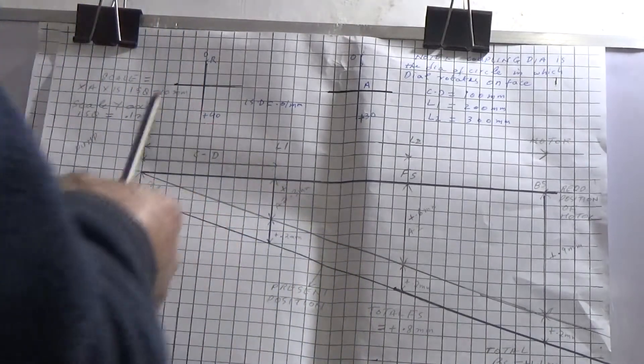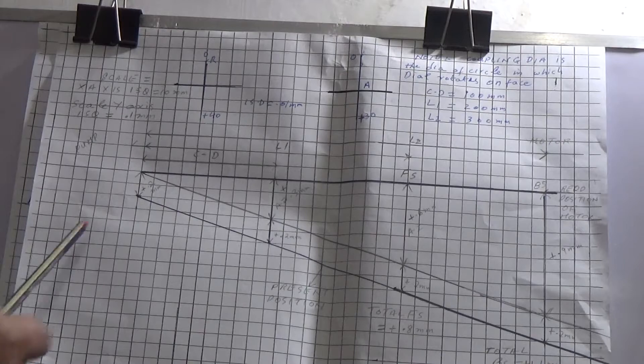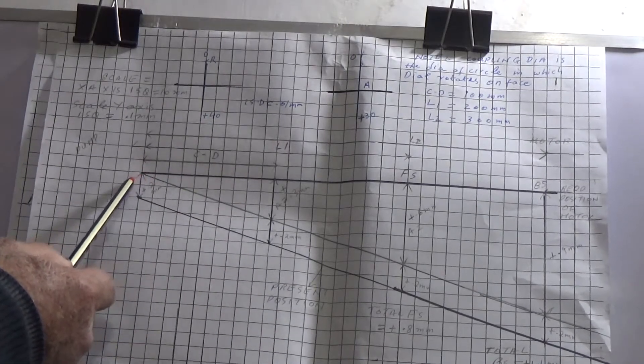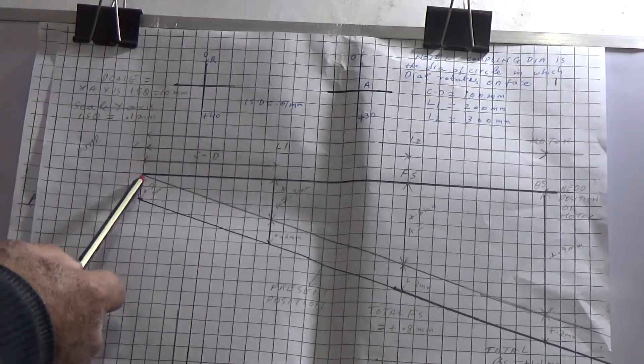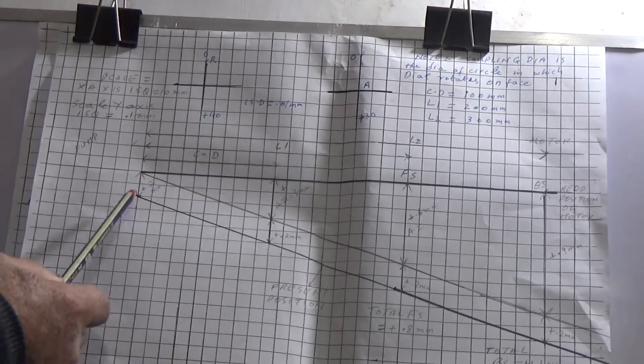Then your radial reading is plus 40, so you will divide it by two, so it becomes 0.2mm. So you will take at this point, starting point. Here your reading is two scales, so 0.2mm, and 0.1 plus 0.1, 0.2mm.